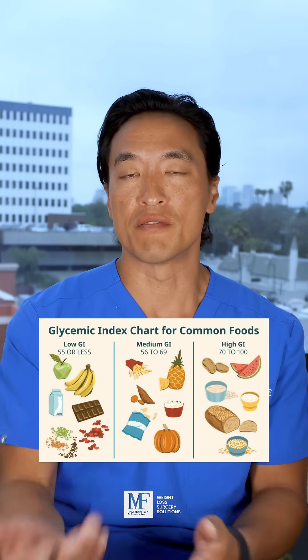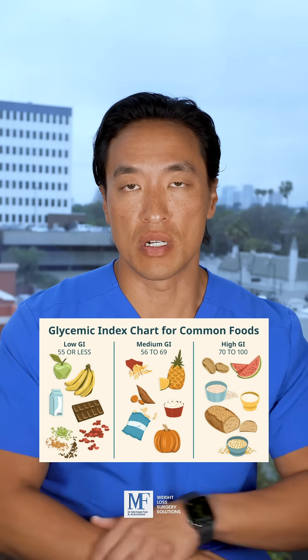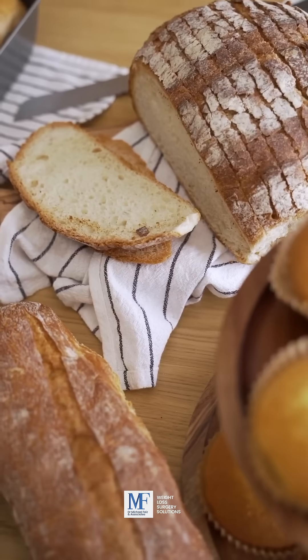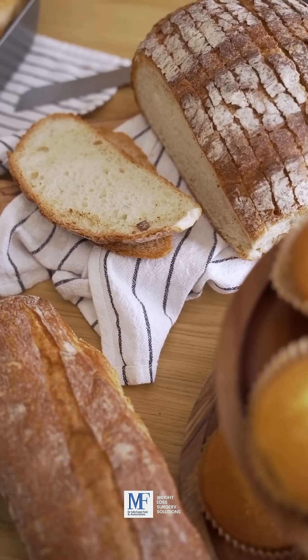Let's talk about foods to avoid in your weight loss journey. The better way to approach this is to understand a couple of concepts. Something called the glycemic index — you should become very familiar with it. There are plenty of charts online that list foods with a higher glycemic index versus a lower glycemic index.